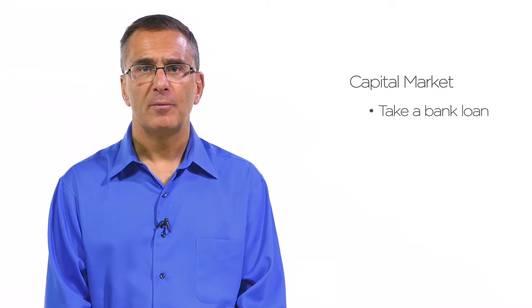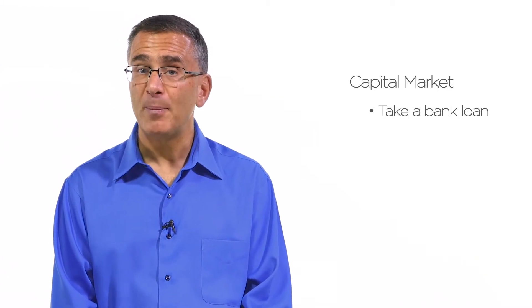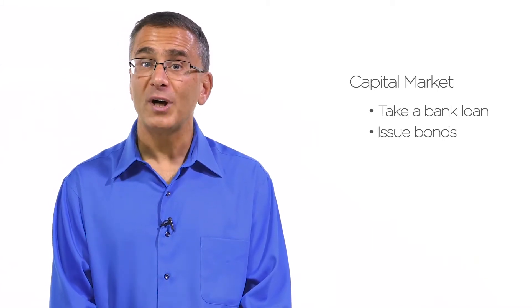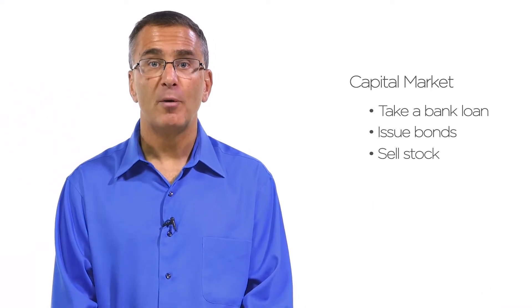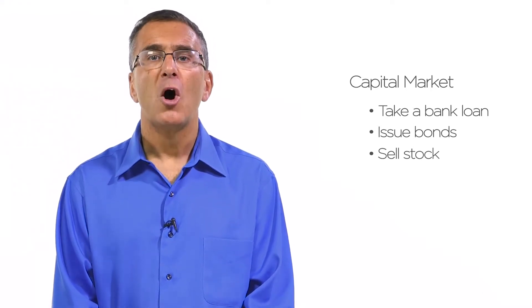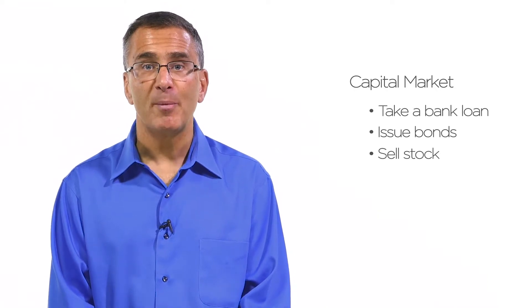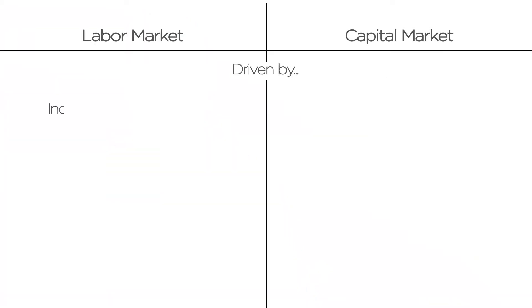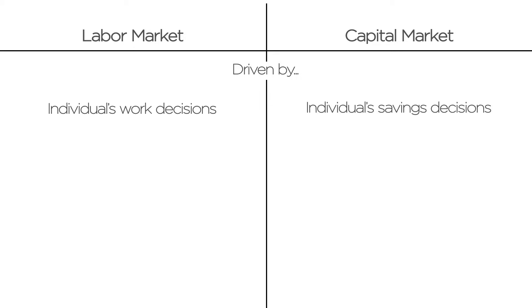For example, you could take a loan from a bank, or you could directly get loans from people by issuing bonds, or you could sell stocks and trade some ownership of your company for money that you can invest. All of these methods of raising capital share a common feature: the supply of money to you comes from individual decisions on how much to save. Just as individuals' decisions on how much to work determine the amount of labor available to firms, individuals' decisions on how much to save determine the amount of capital available to firms. Individuals' savings go into a pool of capital from which firms draw to make their investments.